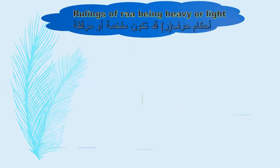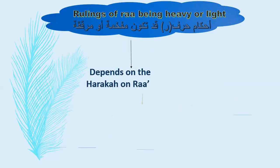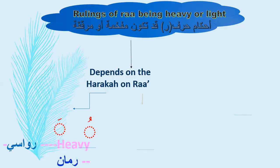Now, the rulings of the letter Ra — being heavy or light. If Ra has Damma or Fathah, it is heavy. For example, 'Ruman' — it is 'Roo', not a lighter sound. 'Roo', heavy. Also 'Rawaasiyya'.